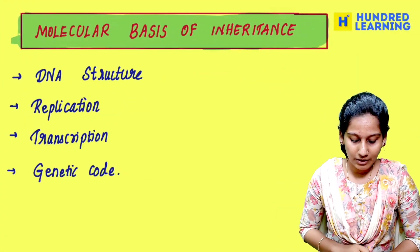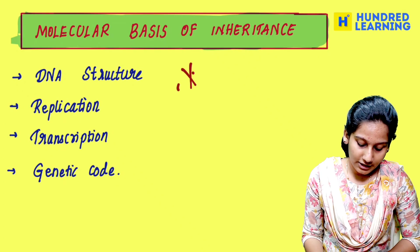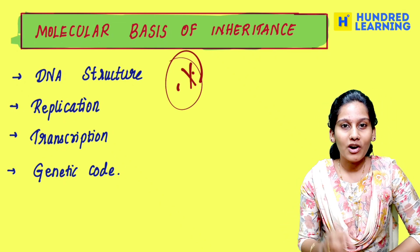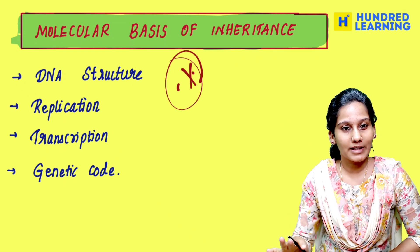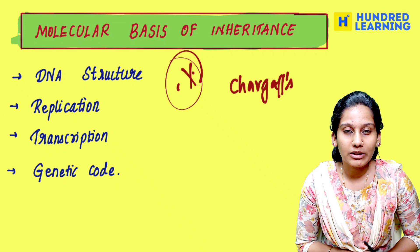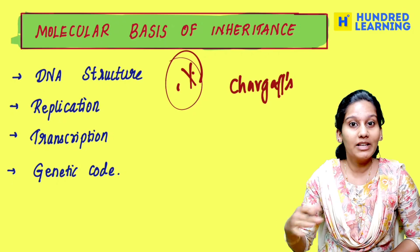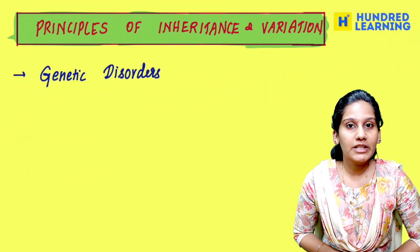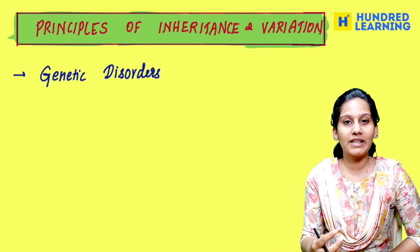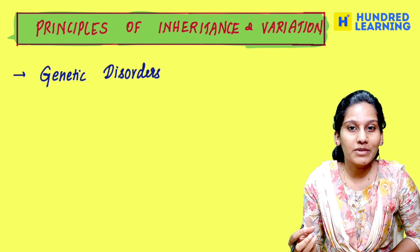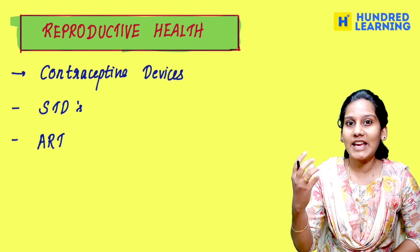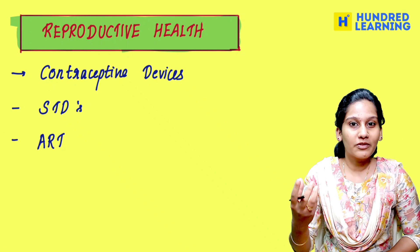The microbes — just go through the microbes and the products, and also sewage treatment plan. Evolution: the conversion and diversion — these are examples. And human evolution — we already have a mnemonic. Very importantly, the most important chapter: molecular genetics — we have already done revision and shots.